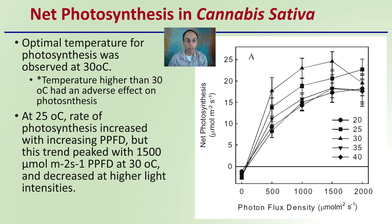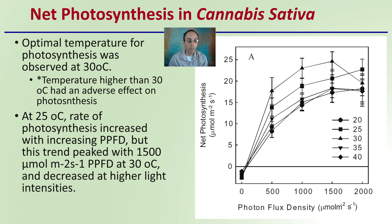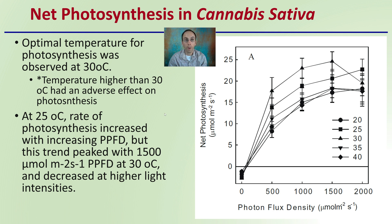Temperature higher than 30 degrees Celsius has adverse effects on the photosynthetic rate — it starts to decrease. At 25 degrees Celsius, the rate of photosynthesis increased with increasing PPFD (light intensity measurement), but this trend peaked at about 1,500 micromoles of PPFD at 30 degrees Celsius, and decreased at higher light intensities. As you increase light intensities, there's an optimum with intensity and temperature — more is not always better. Around 30 degrees Celsius and 1,500 micromoles for light intensity should be your target levels.